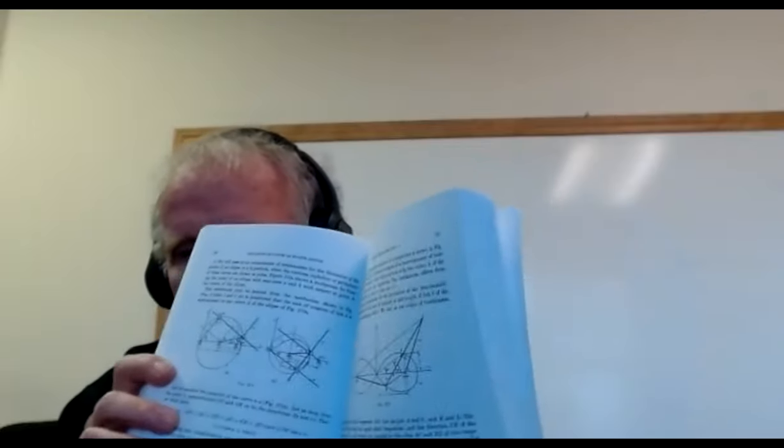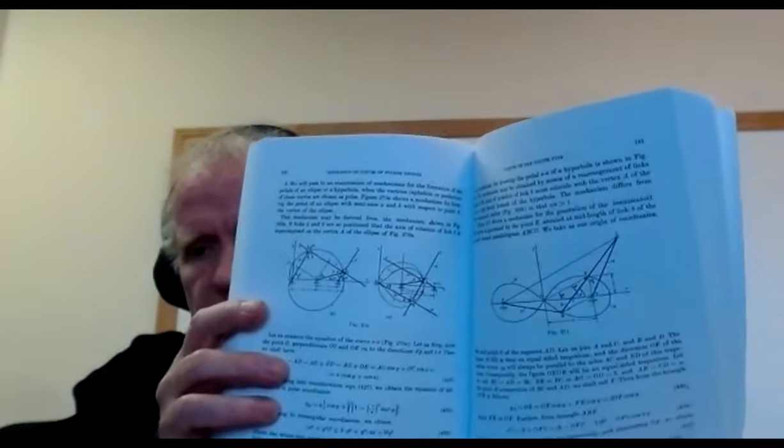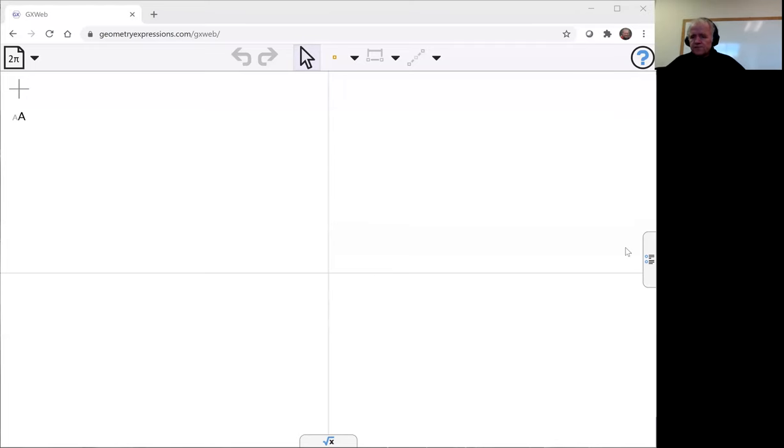It's figure 270 here, the one on the left hand side. It's an adaptation of the mechanism which drew the pedal point at the center. It's using the same mechanics to actually create the tangents to the ellipse.